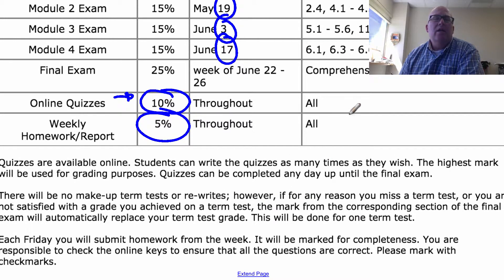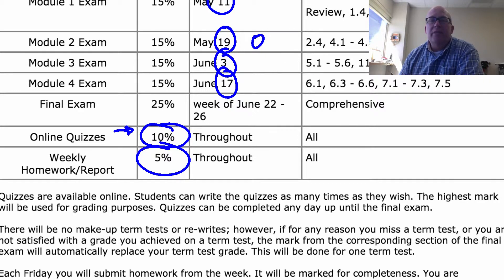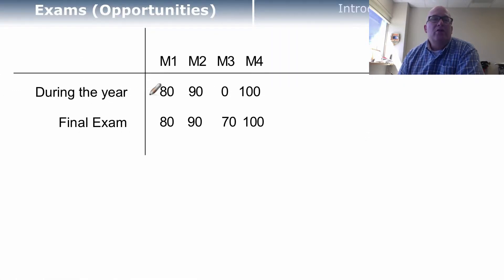However, the final exam will be split into four sections as well. So say if you get a zero on one module exam, you can make that up on the final. During the semester if you miss module three's exam, but then on the final exam for those four sections you actually get a 70, I go and replace the zero with a 70 as if the zero was never there.